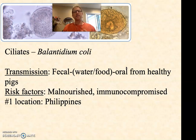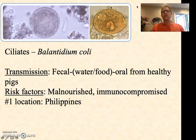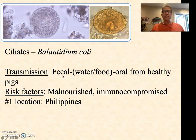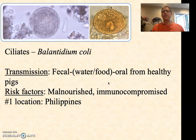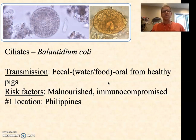The third category is the ciliates. There are lots and lots of ciliates — you probably studied paramecium in school; that's a non-infectious ciliate. As far as we know, there's only one ciliate recognized as causing infection in humans, and that's Balantidium coli. It gets passed from the feces of one person through the mouth of the next by way of water or food. Healthy pigs are often involved — pig feces can get into water or food that is orally ingested. Healthy people are typically asymptomatic; those most likely to get sick are malnourished or immunocompromised people. The vast majority of B. coli infections occur in the Philippines.